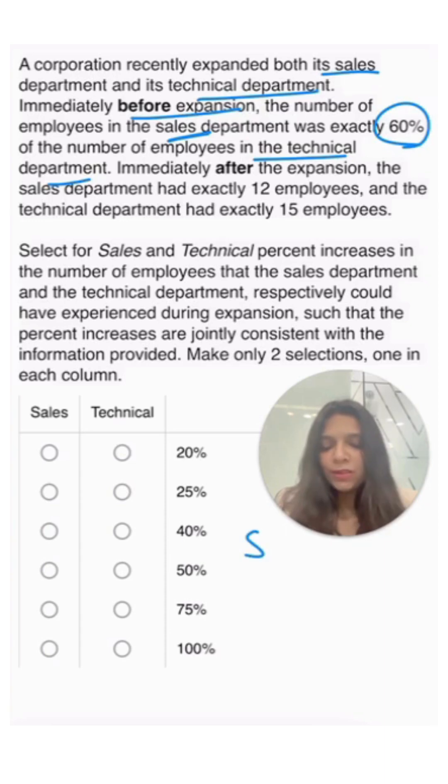Okay, so we're talking about sales department, technical department, before expansion. Let's say if the technical department had 100x employees, the sales department had 60% of that, which is 60x employees.